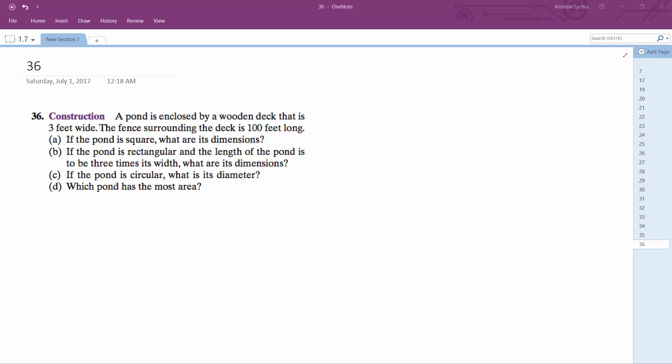We've got a pond that's enclosed in a wooden deck that is three feet wide. The fence surrounding the deck is a hundred feet long. So if the pond is square, what are its dimensions?